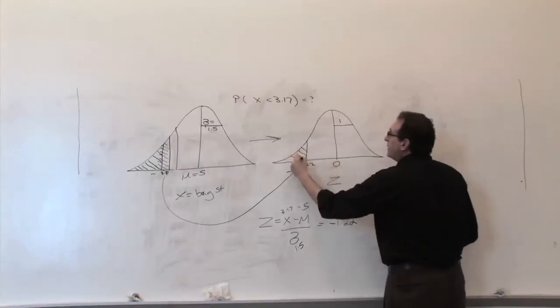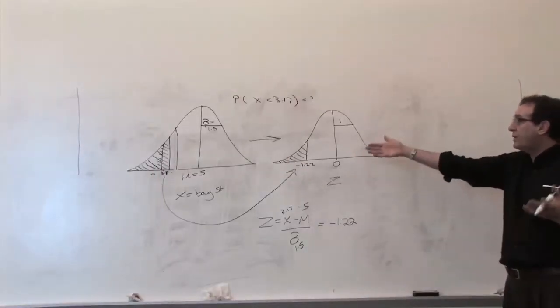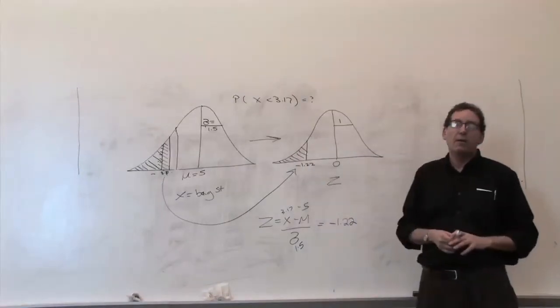So minus 1.22 is here, and again, you might as well shade in the piece that you're looking for so it pops out at you, and you might as well take a second guess, because maybe you made a mistake on that guess. My guess here is also about 12%.